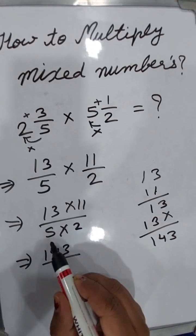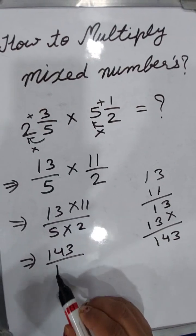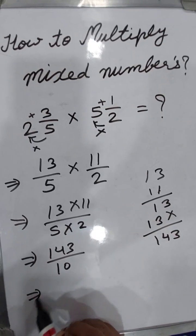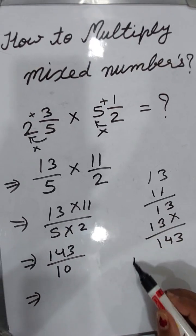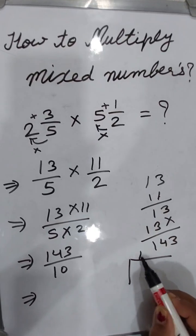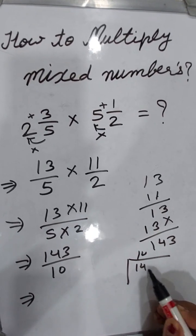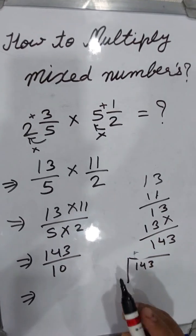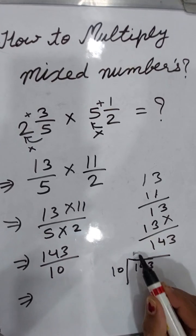The denominator is 5 times 2 equals 10. Now write this answer 143/10 as a mixed fraction by dividing 143 by 10.